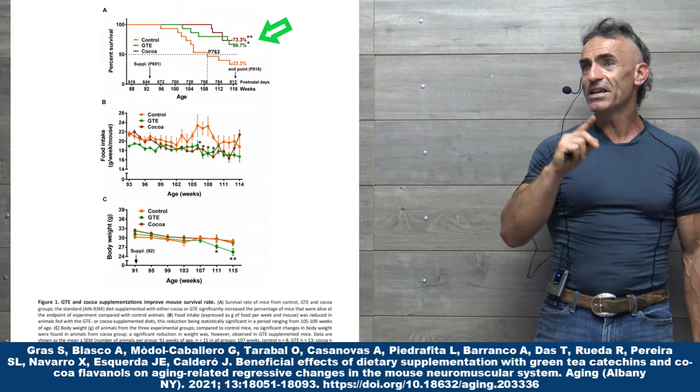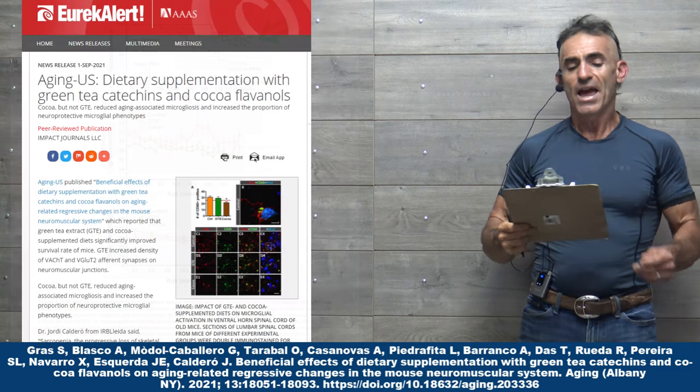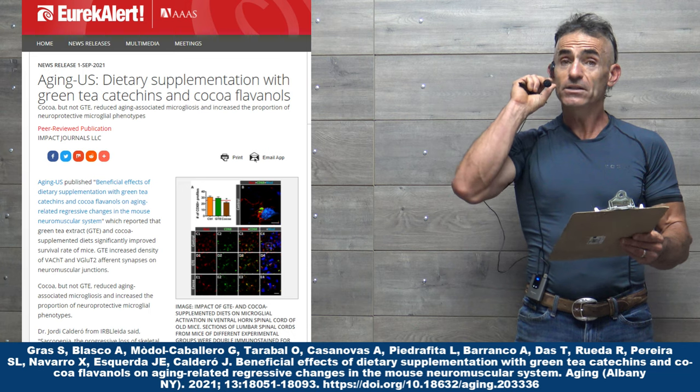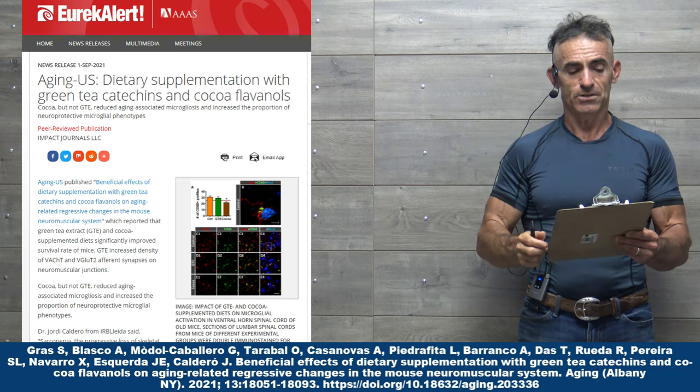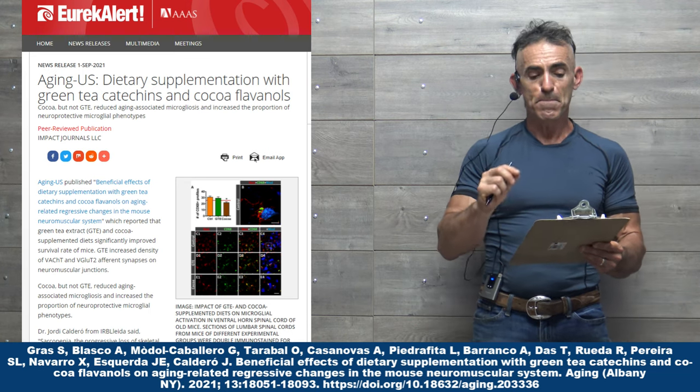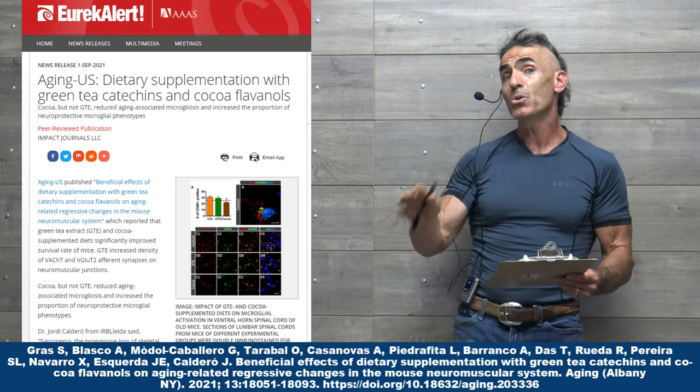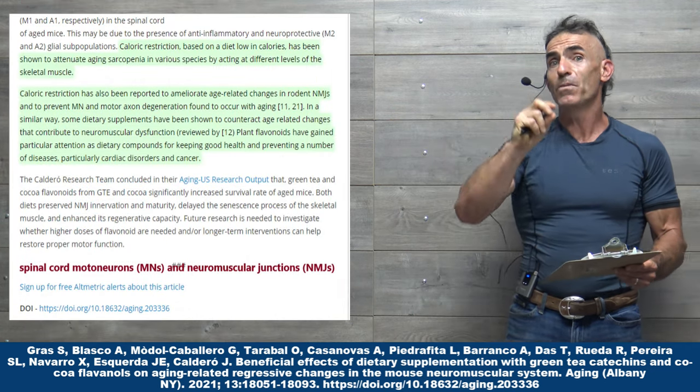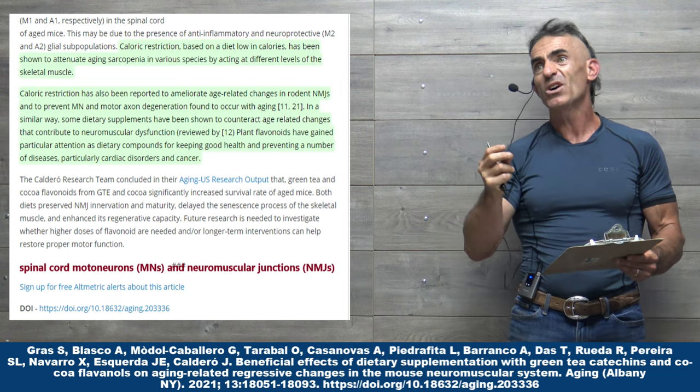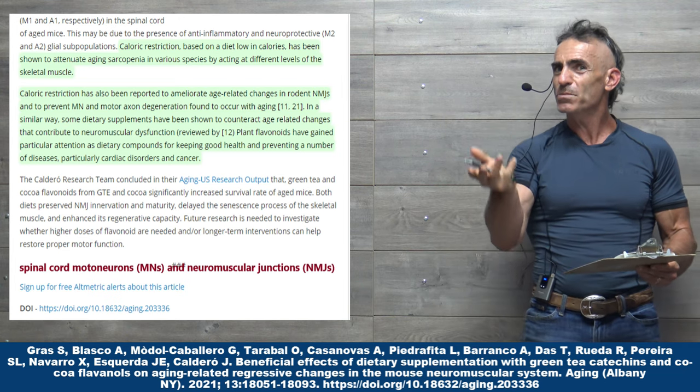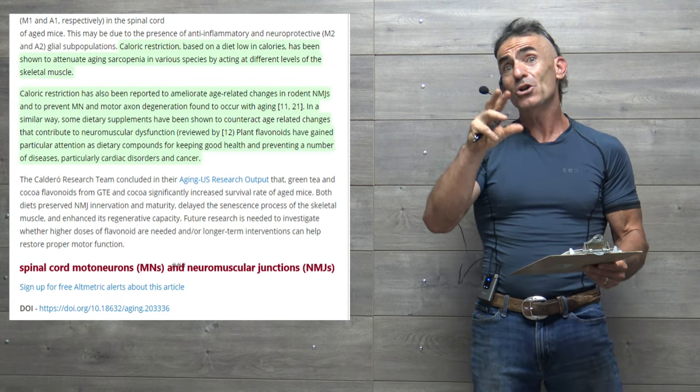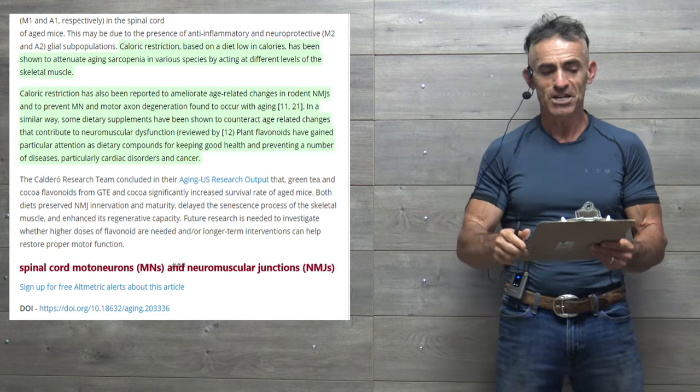So let us get into the research as follows. Aging US dietary supplementation with green tea catechins and cocoa flavanols. Caloric restriction based. Now we're going to scroll down to the public release of the research. We're going to read a large excerpt from the full study, primarily because when I read the first part of the public release, it kind of left some things out. But the conclusion of the full study is pretty comprehensive. So let us proceed.